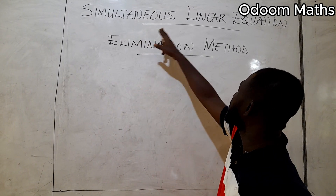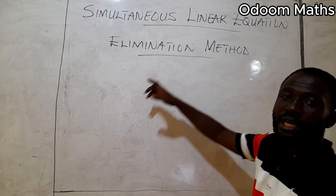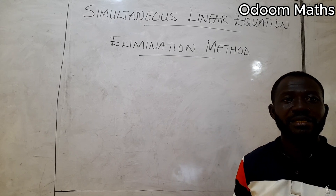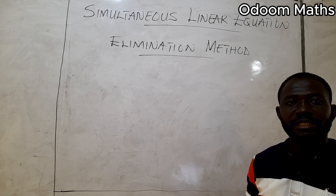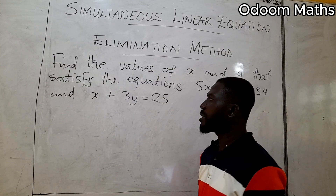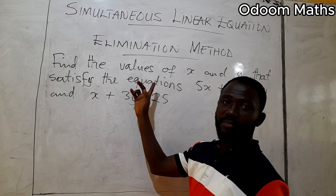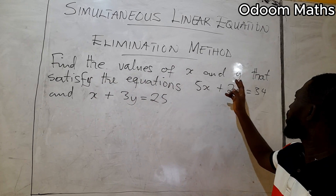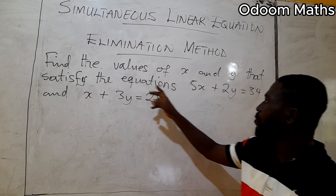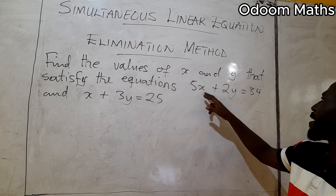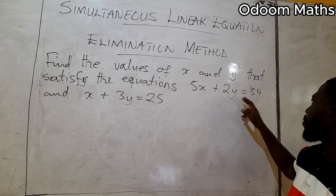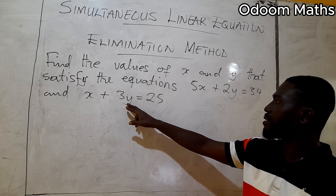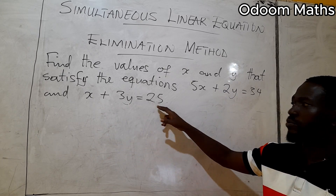Today we are looking at simultaneous linear equations using the elimination method. We have to find the values of x and y that satisfy the equations: 5x plus 2y equals 34, and x plus 3y equals 25.